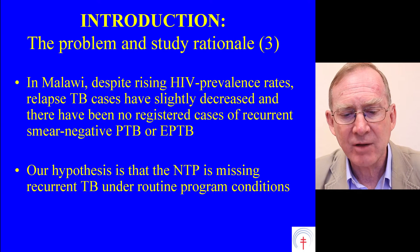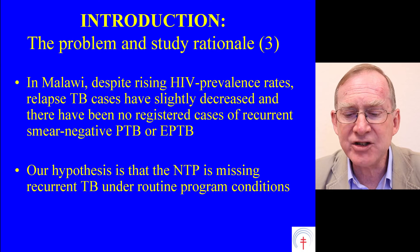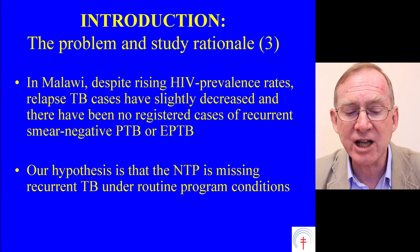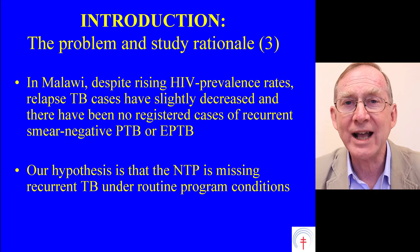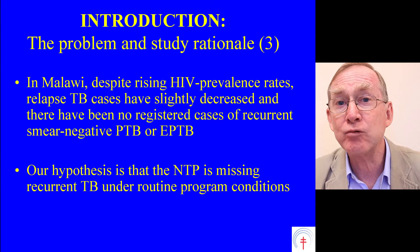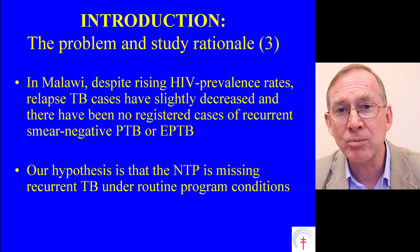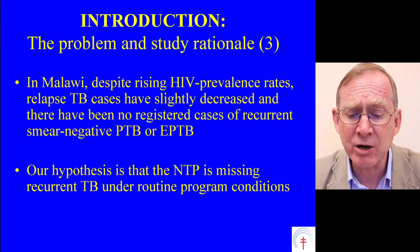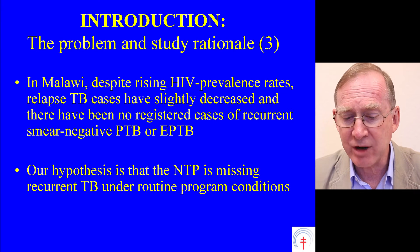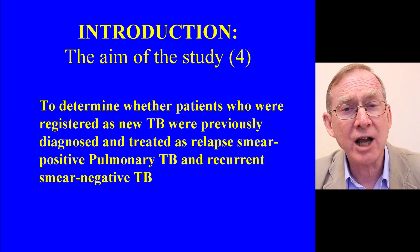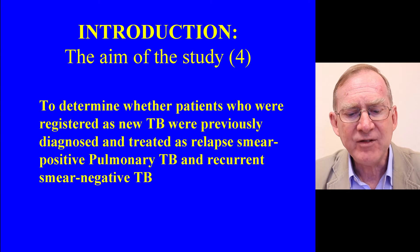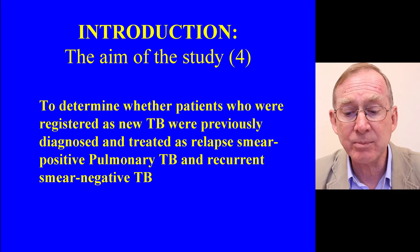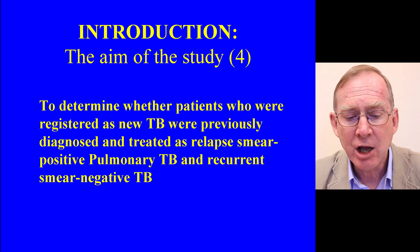Next paragraph — the problem: 'In Malawi, despite rising HIV prevalence rates, relapse TB cases have slightly decreased and there have been no registered cases of recurrent smear negative pulmonary TB or extra pulmonary TB.' Here I would provide references to studies done in Zomba, Mzuzu, Blantyre, and Malawi. 'Our hypothesis is that the national TB programme is missing recurrent TB under routine programme conditions.' The final paragraph clearly states the aim: 'The aim of this study was to determine whether patients registered as new TB were previously diagnosed and treated as relapse smear positive pulmonary TB.'